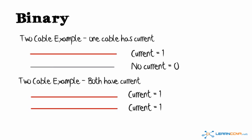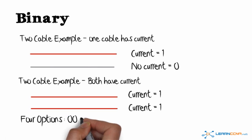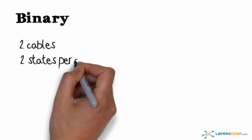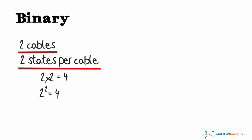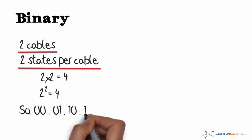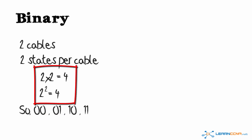So in this case, we have two cables, but there are four combinations or four options: zero, zero — no current on both; zero, one — no current on first but current on second; one, zero — current then no current; or one, one — which means current on both. The reason for this is that we have two cables and two possible states, either on or off. Two cables with two possible states gives us four, or two to the power of two equals four, or two times two equals four. To summarize: two cables times two states equals four combinations.